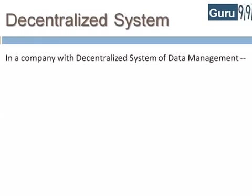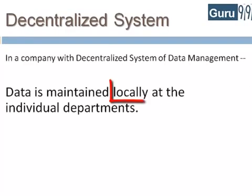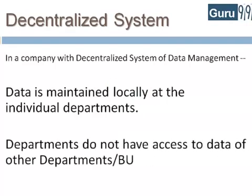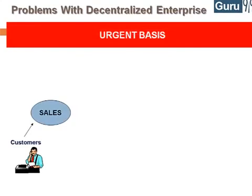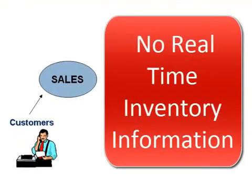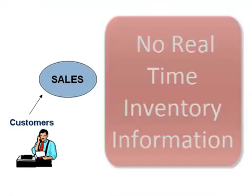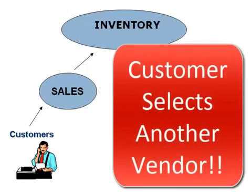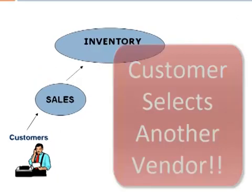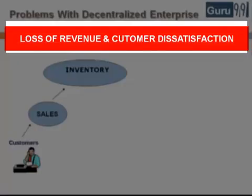In a company with a decentralized system of data management, data is maintained locally at the individual departments. Departments do not have access to information or data of other departments. To identify the problems arising from decentralized enterprise management systems, let's look at the same business process again. The customer approaches the sales team for a product, but this time he needs the product on an urgent basis. The sales team do not have real-time information access to the product's inventory, so they approach the inventory department to check the availability of the product. This process takes time and the customer chooses another vendor,